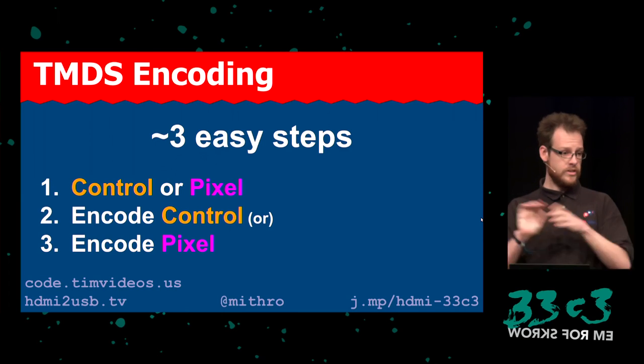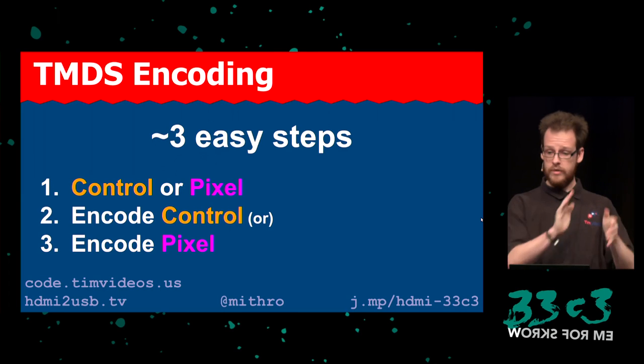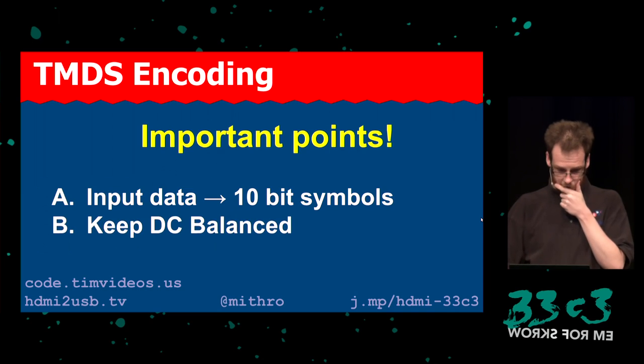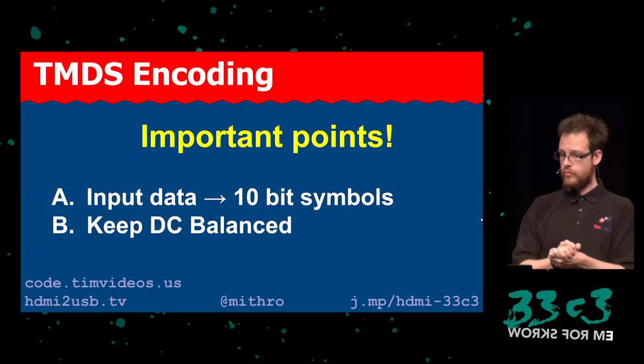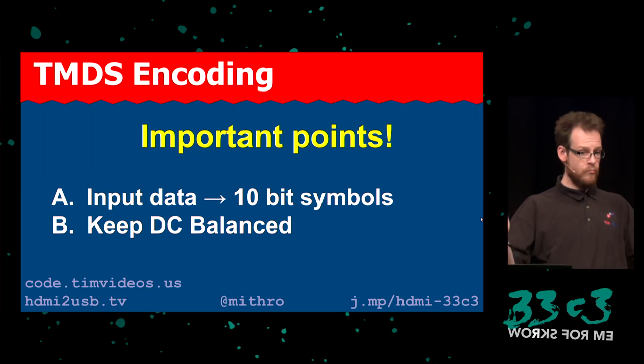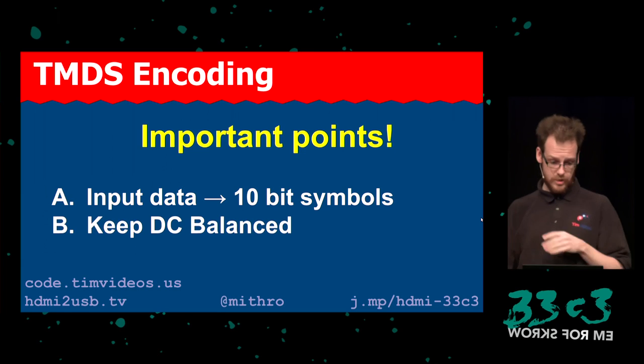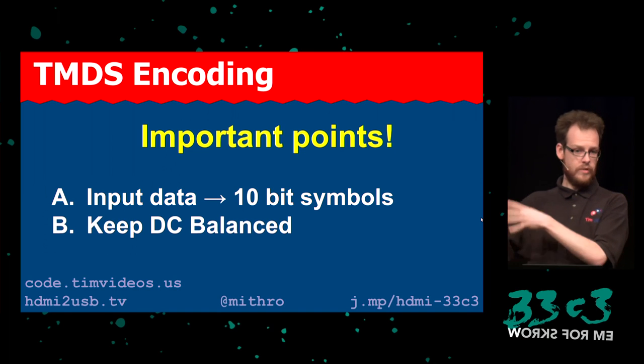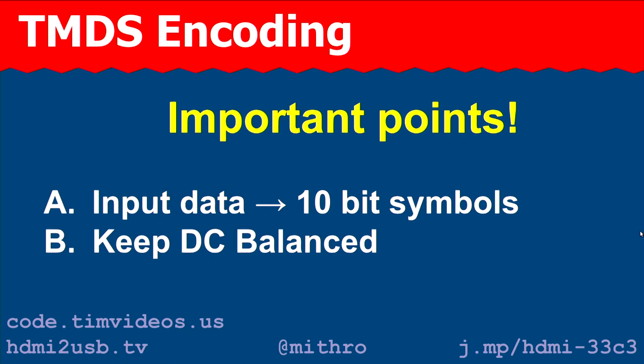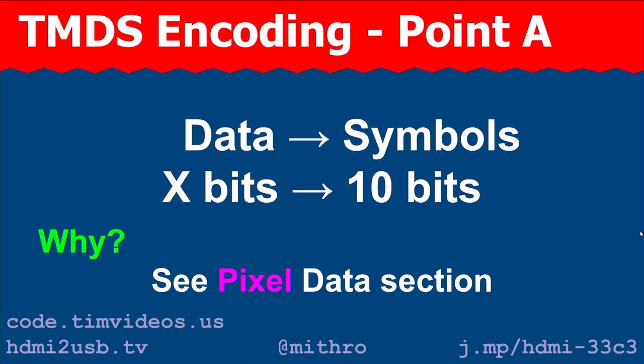The diagram is for the encoder; there's an equivalent for decoding and it's really hard to read. The three steps: first, determine whether we're dealing with control data or pixel data, then encode the control or encode the pixel. An important point: the input information is always converted into 10-bit symbols regardless. The information always goes out as 10-bit symbols. We need to maintain DC balance. The question is: why 10 bits when pixels are 8 bits?